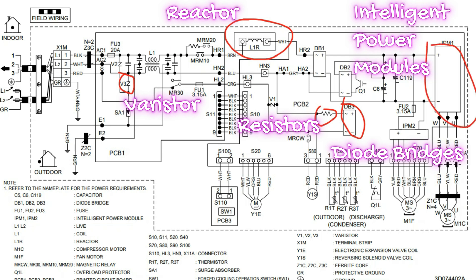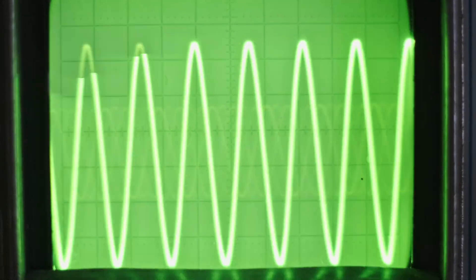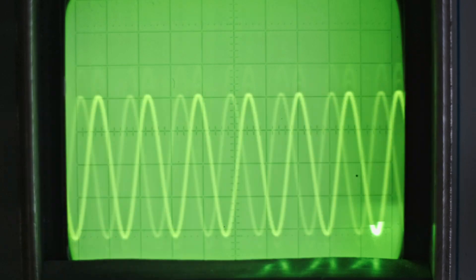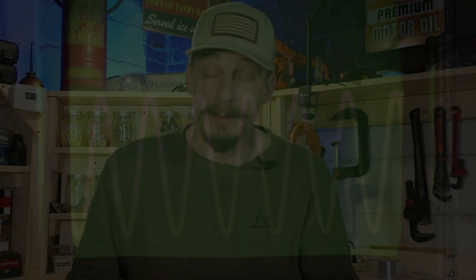All these components are basically designed to manipulate, control, and stabilize the electrical signal traveling through all these circuits. The secret sauce in mini-split systems is the ability to modulate and control small changes in voltages and frequency so that we can vary the power supply to our motors to get all these different speeds out of them.